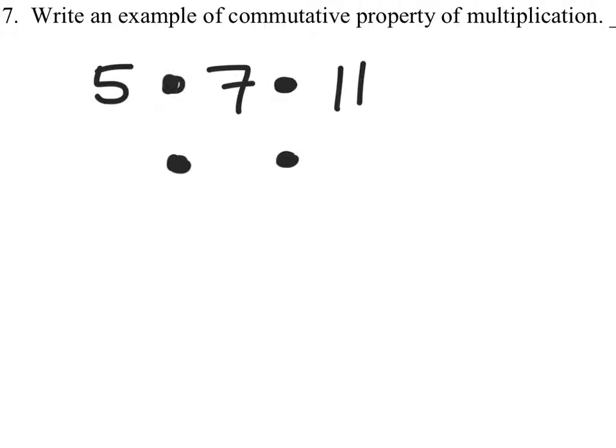So I have multiplication, but now instead of 5 being in the front, maybe 5 is in the middle. And maybe instead of 7 being in the middle spot, it is in the front, but the 11 didn't move. That's okay because the 5 did move, and so did the 7. So this would be an example of the commutative property of multiplication.